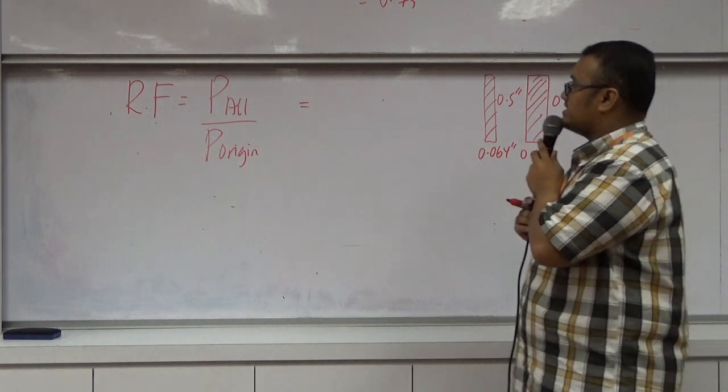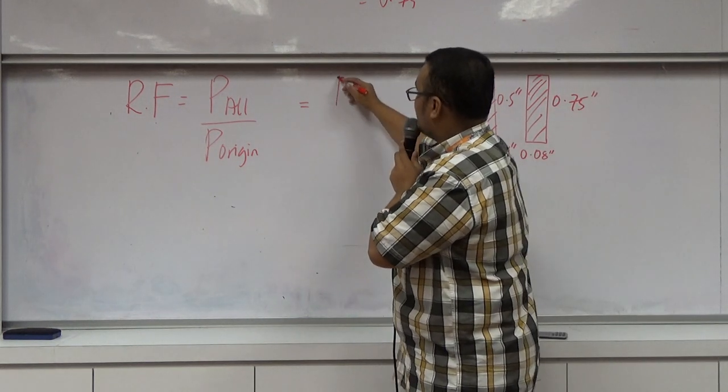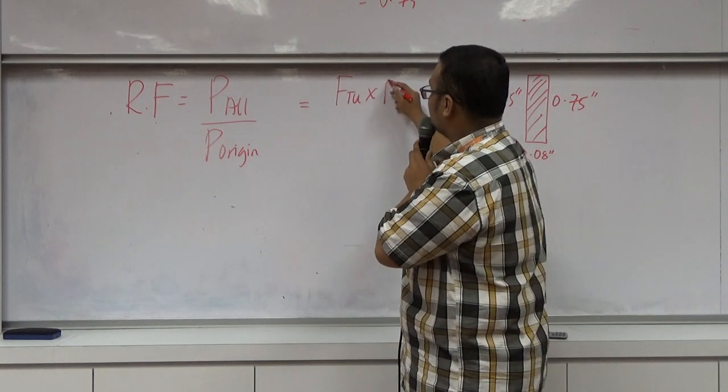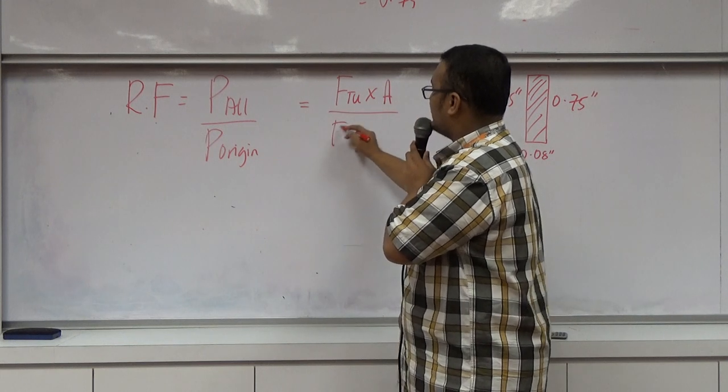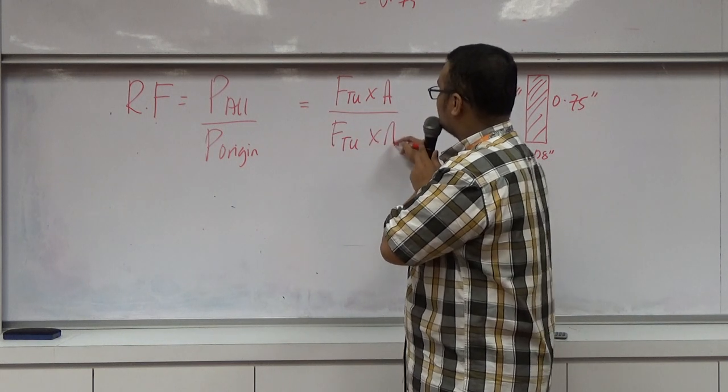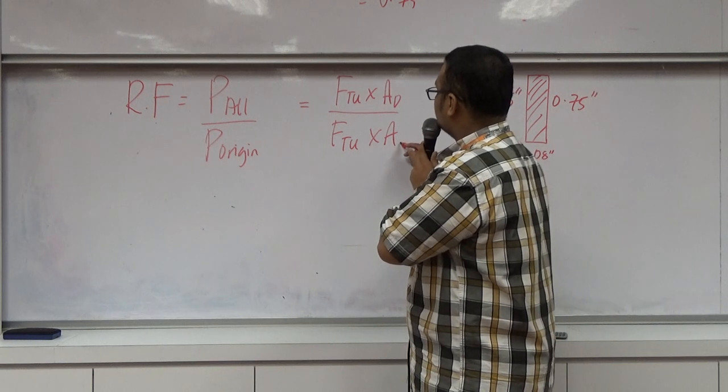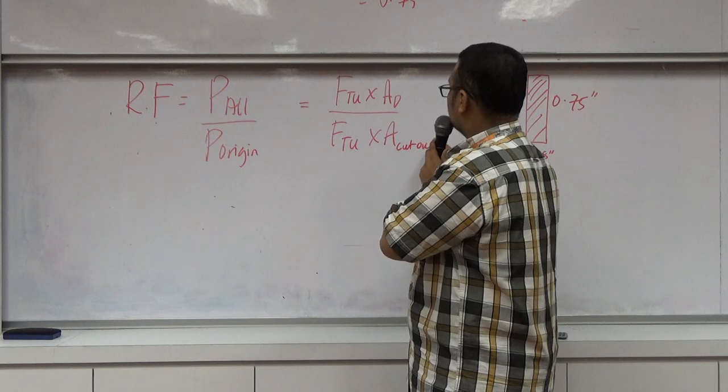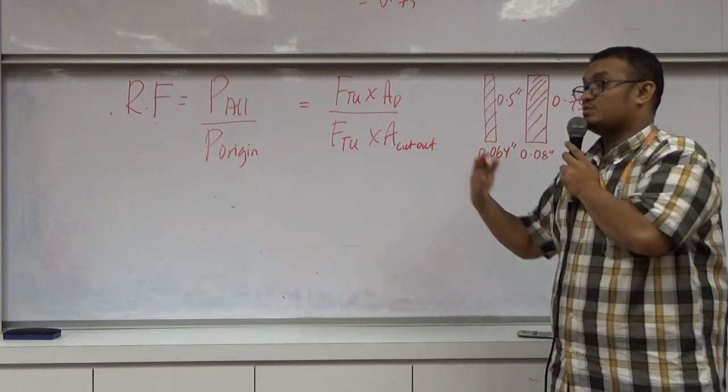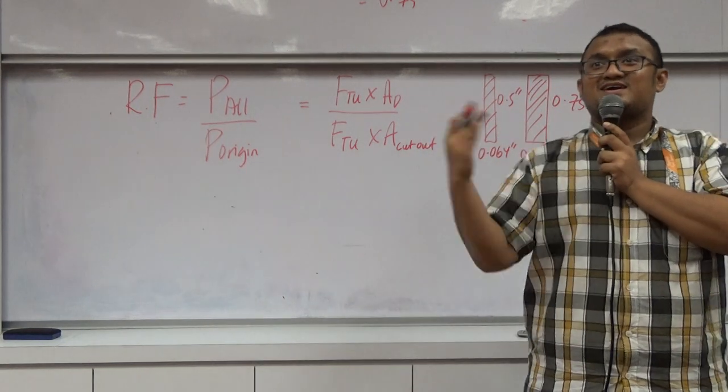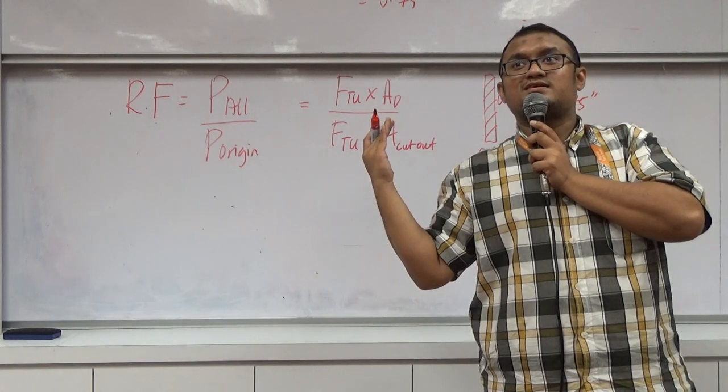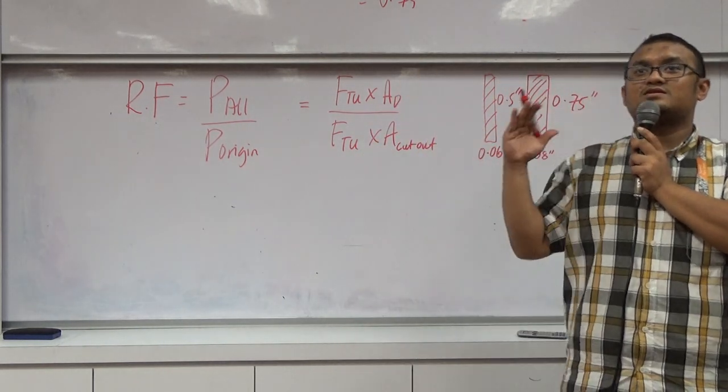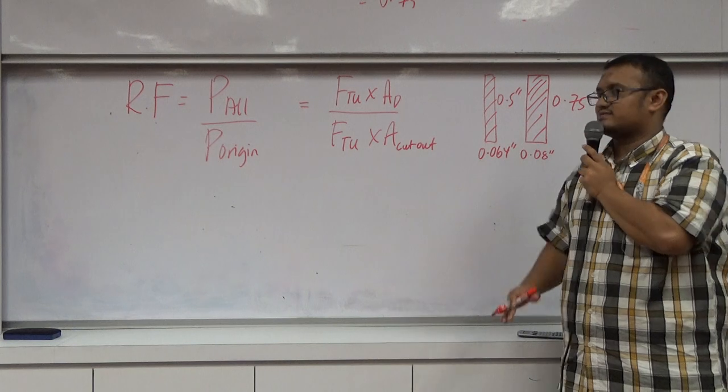So the formula is going to be FPU times area over FPU times area. This is area W, area cut out. We want to compare, are we giving a positive loading restoration back?